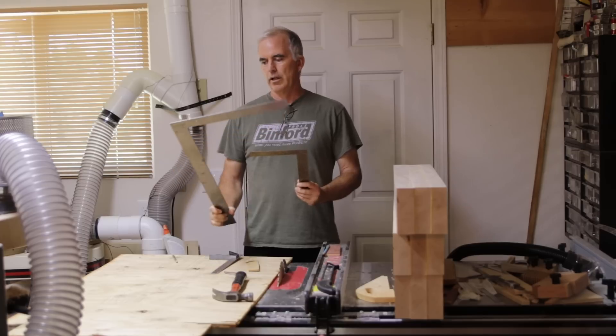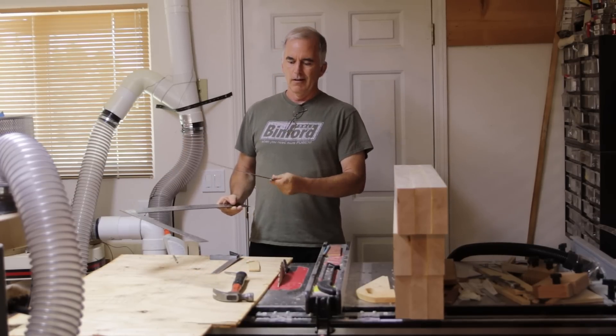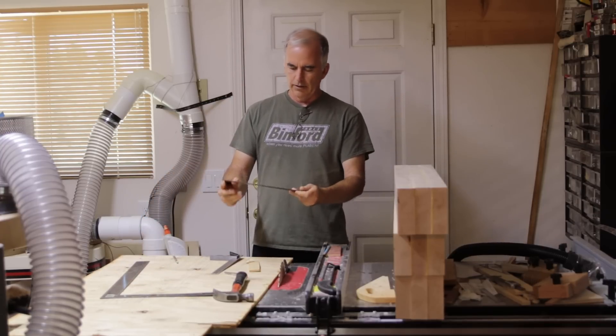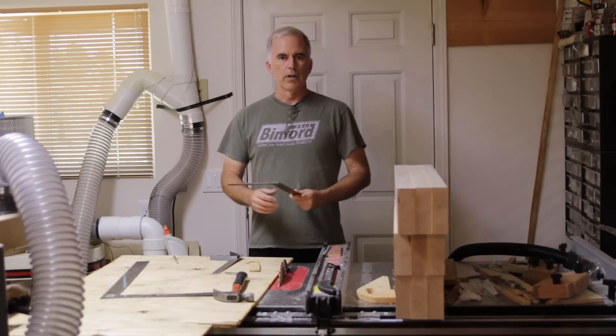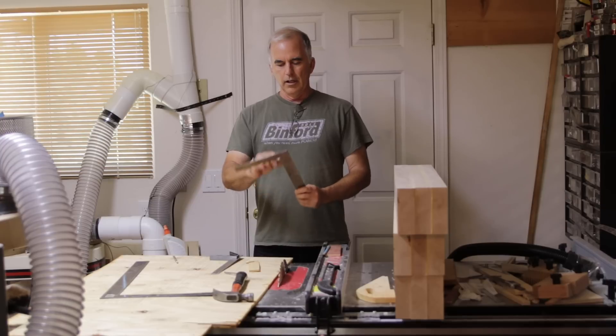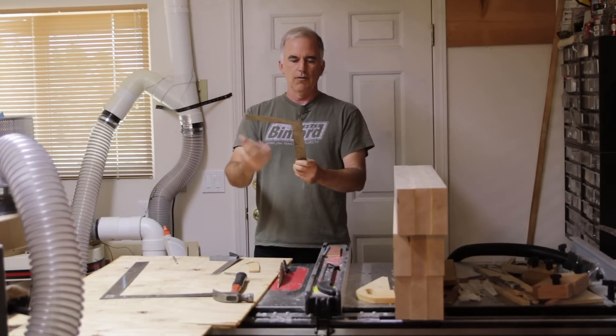These two squares aren't the greatest because of the contrast on the markings and stuff. At some angles, it looks just fine. At other angles, you can't really see anything at all, any of the markings. So they have some better squares now, but you can actually adjust this. This one was accurate already and I've had it for decades.